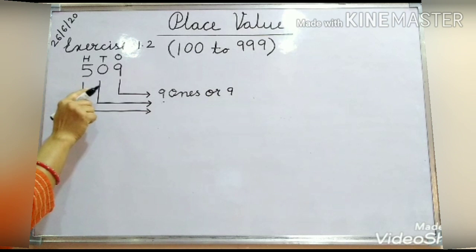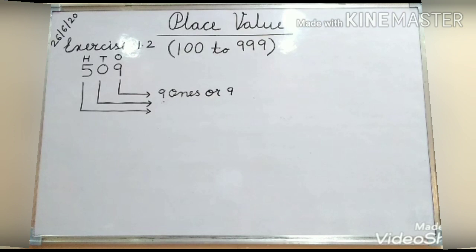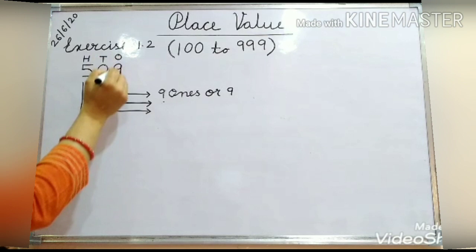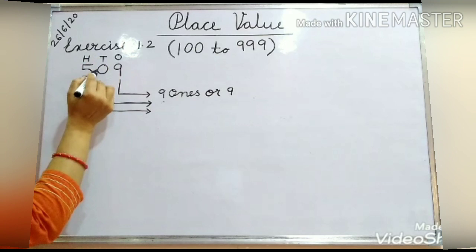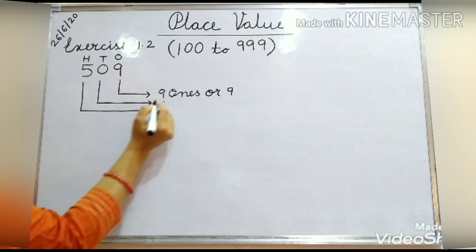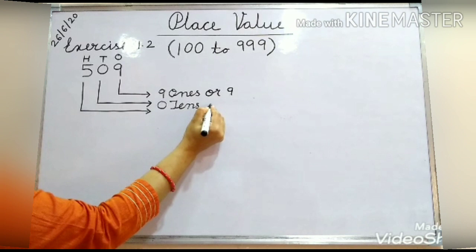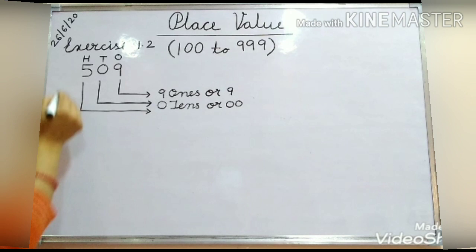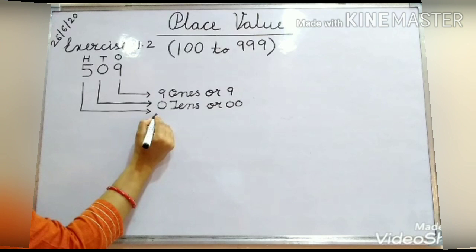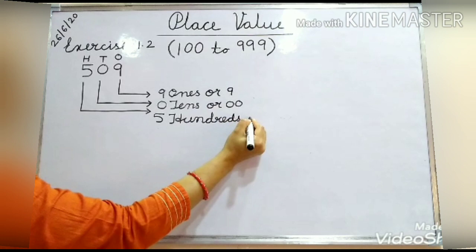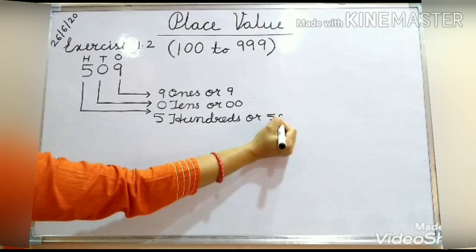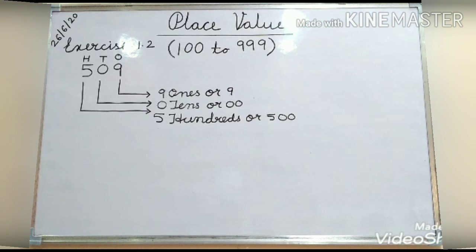Then you can see one another example here — that is 509. You have to find out the place value. Start from the 1's place digit: 9 is there, so the value of 9 will be 9 ones, or you can write 9. At 10's place, the digit is 0, so the value will be 0 tens — you can write 0. At 100's place, the digit is 5, and this value will be 5 hundreds — you can write 500. Clear?